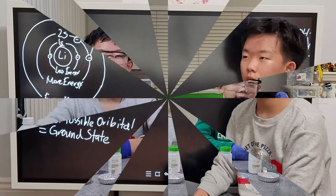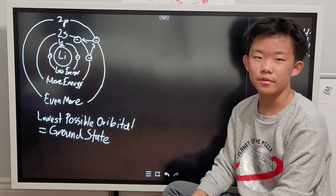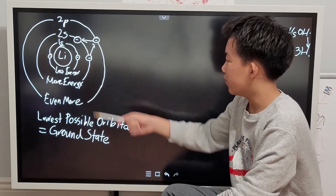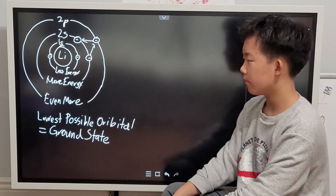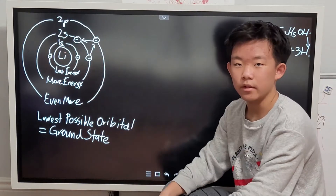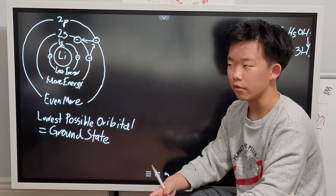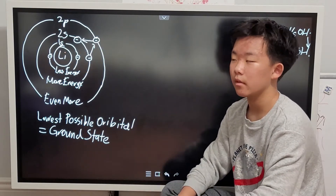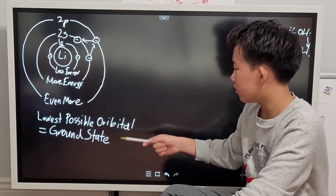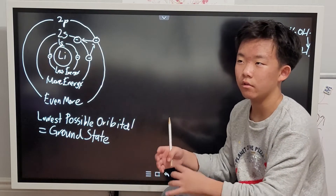Now let's see what will happen with our contraption. I drew the electrons of a lithium atom here. The closer to a nucleus an electron is, the less energy it has, and the further away you go, you have more energy. The lowest possible orbital is called the ground state, because ground is obviously lower than a hill or a mountain.